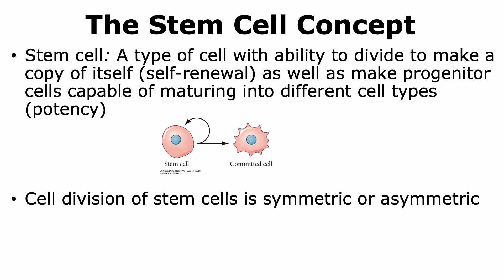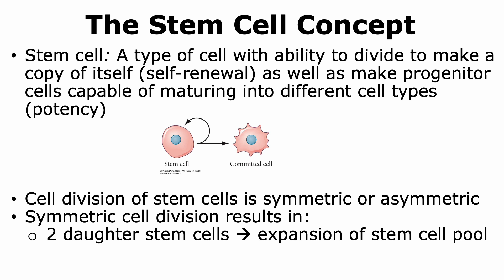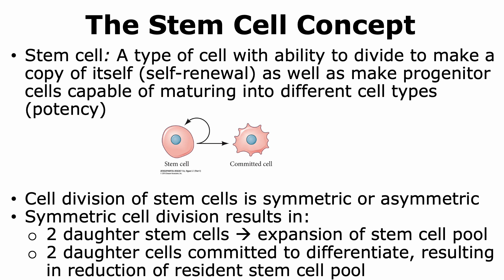The cell division of stem cells can be symmetric or asymmetric. When the stem cell undergoes symmetric division, it can result in two outcomes. The first outcome is two daughter cells that result in the expansion of the stem cell pool — when one stem cell divides to form two daughter cells, both daughter cells are stem cells, giving more numbers of stem cells. Another outcome is that the two daughter cells produced are committed to differentiate, causing a reduction in the stem cell pool. Thus, in symmetric cell division, the daughter cells are going to be the same: they will either be stem cells or progenitor cells that will ultimately differentiate.